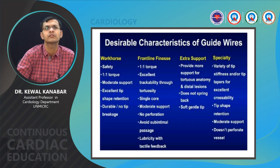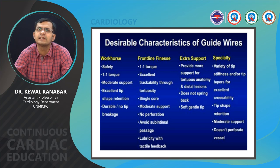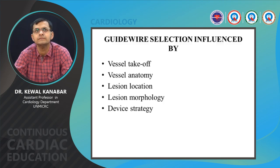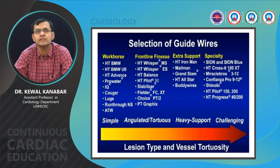Based on clinical scenario, we have workhorse wires, extra support wires, and specialty CTO wires. Workhorse wires should be safe, have one-to-one torque transmission, and be durable. Extra support wires are used for tortuous anatomies — Grand Slam or Iron Man wires. Specialty wires are usually used for CTOs. Guide wire selection is influenced by the type of vessel, nature of the lesion, location, morphology, and the types and number of stents to be placed.